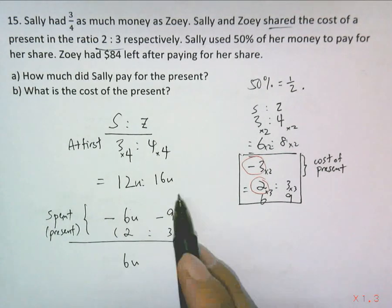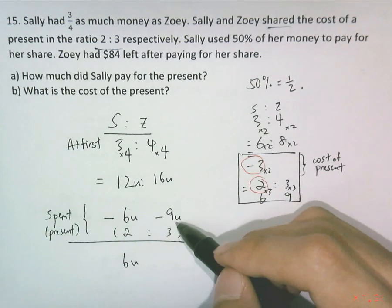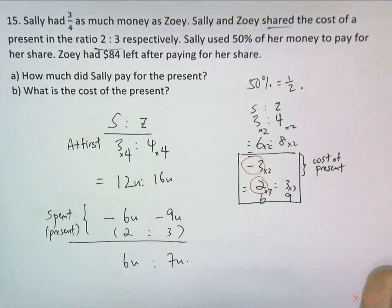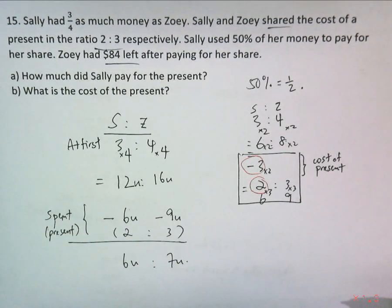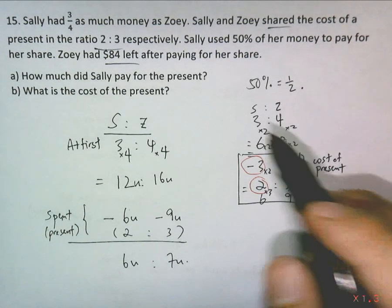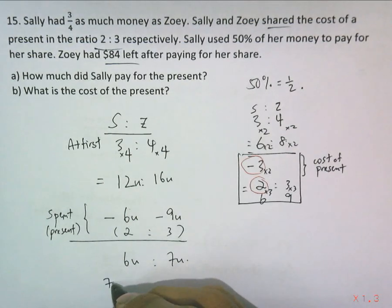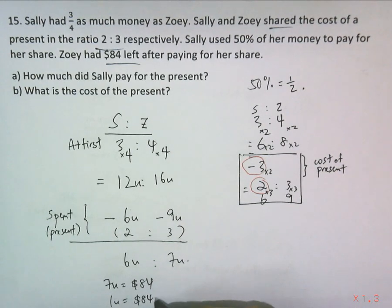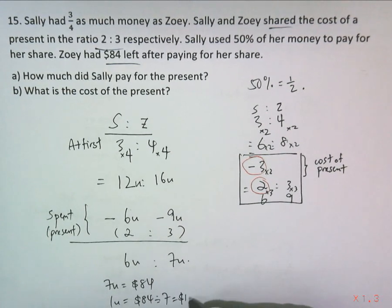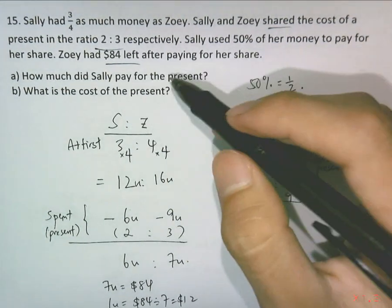And 16 minus 9 units, so Zoey would have 7 units left. Given in the question, 7 units would be the $84 that Zoey had left. 7 units equals $84. 1 unit equals $84 divided by 7, which is $12.